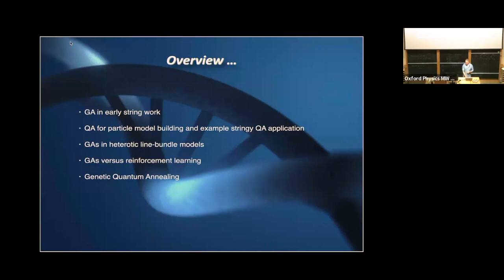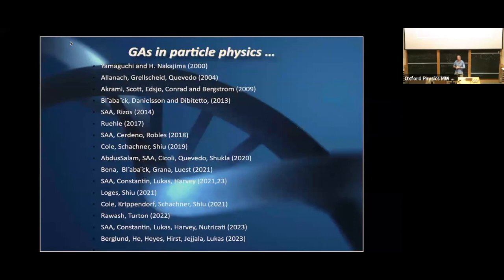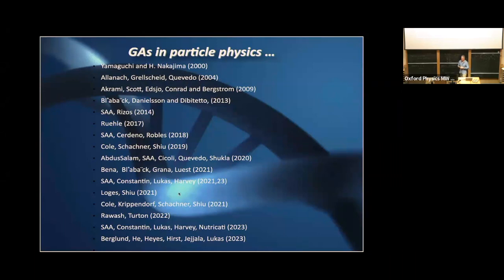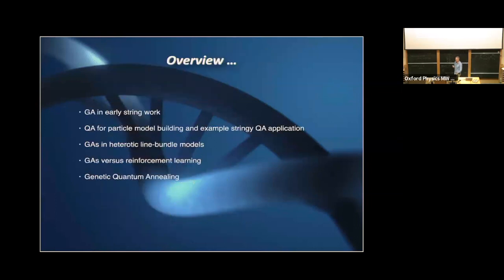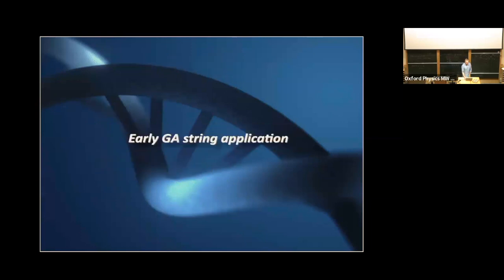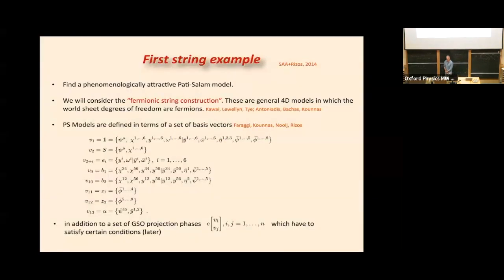Before I start, I want to give credit to people who worked on genetic algorithms in particle physics. I wasn't the first, but I was possibly the first to be aware of it because I was the PhD examiner of David Grellshite in 2004, which is where I first saw that. That was one of the earlier papers with Fernando Quevedo. It's not really been so popular compared to other machine learning papers, and quantum annealing is even fewer, so I don't need to give many references — pretty much everything I'm going to talk about is essentially what we did.